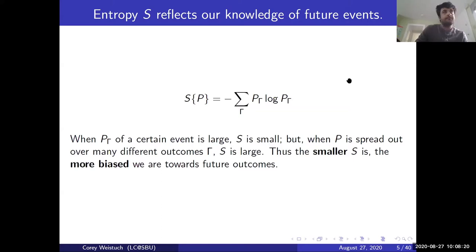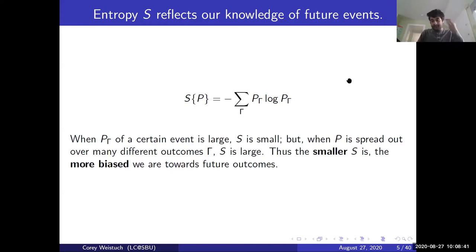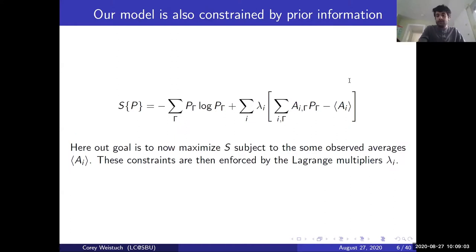So first, what is entropy? Entropy is basically the amount of information content in a probability distribution—really how uncertain we are about future events. When the probability distribution is very narrow, like the 100% chance of rain example, the entropy is going to be really small because we're putting lots of faith into a very particular outcome. And if it's spread out over many different outcomes, the entropy is large. In other words, the smaller the entropy is, the more biased we are towards future outcomes. So if we want to minimize bias, it would be logical to maximize this entropy.